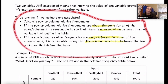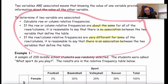First, you have to calculate row or column relative frequencies. If the row or column relative frequencies are about the same for all the rows or columns, it's reasonable to say there's no association. If however the relative frequencies are pretty different for at least some of the rows and columns, then it's reasonable to say there is an association between the variables.